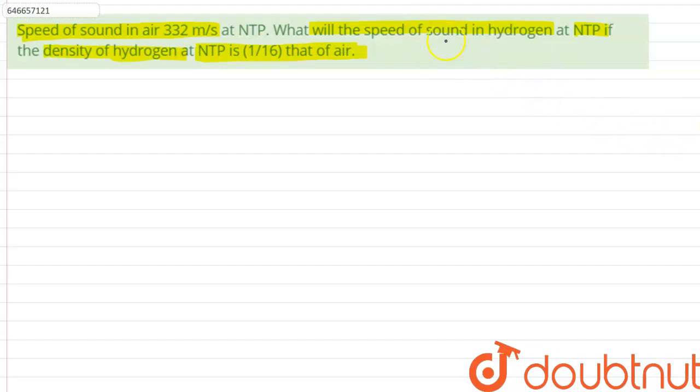So the question is asking us to find out what will be the speed of sound in hydrogen if the ratio of density of hydrogen to that of air is 1/16. Since we know that in terms of